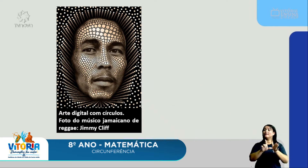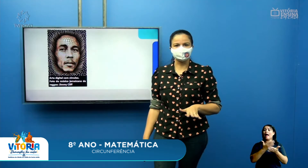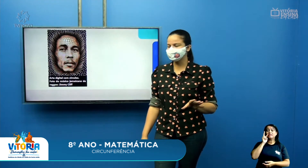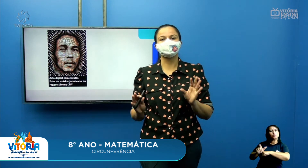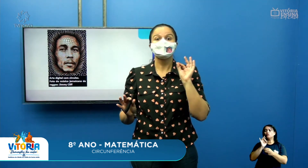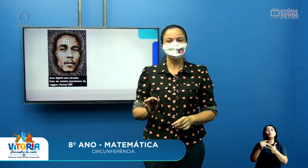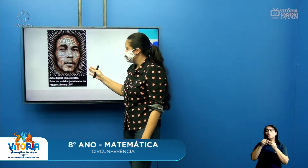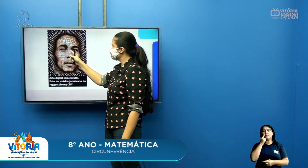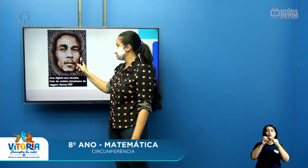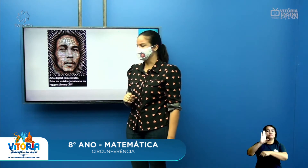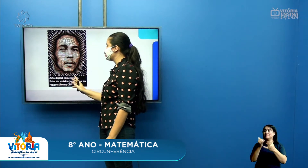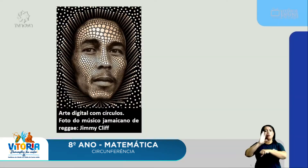Antes de começar a nossa aula, eu trouxe aqui essa imagem para você, que é uma arte digital. Essa foto desse artista foi feita apenas com formas geométricas, apenas o círculo. Se você observar aqui bem de perto, só através de círculos ele conseguiu montar o próprio rosto. Tem aqui uma arte digital com círculos, uma foto do músico jamaicano do reggae, Jimmy Cliff.